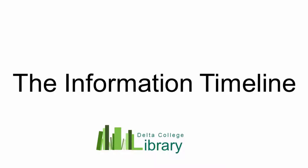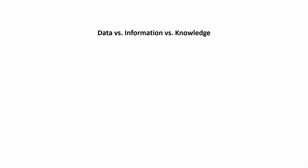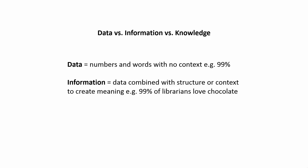Gathering information is an important part of gaining knowledge and skills through research. Information starts with data. Data consists of numbers and words with no context. For example, 99%. Information is data combined with structure or context to create meaning.